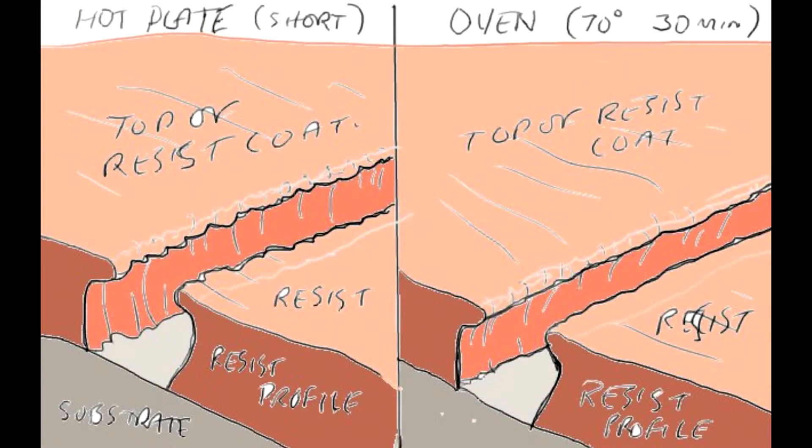When you're baking on a hot plate with the chlorobenzene process, a hot plate is perhaps 90 degrees for say a minute. You'll tend to get a slightly more ragged overhang. So on the left you have a hot plate resist baked—hot plate baked resist. On the right you've got the oven baked resist, which is baked at 70 degrees C for 20 minutes. It's a much smoother looking profile in my experience.